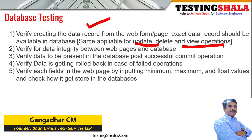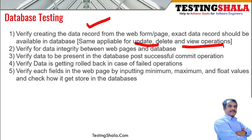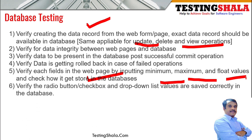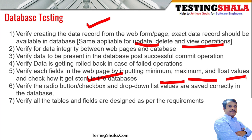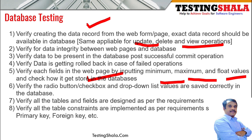Before a commit operation, if the overall operation fails, it should roll back to the original state. For each field on the web page, we should try minimum and maximum values, floating values, and integer values — both valid and invalid data — to see how data is stored. We should also validate radio buttons, checkboxes, and dropdown lists to ensure the selected options are stored correctly in the database, and verify table constraints such as primary key and foreign key.